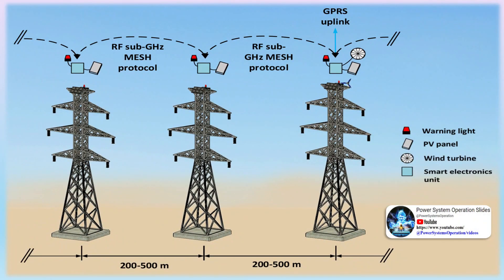A telecommunications power tower is a common tall structure found in outdoor open spaces. For the flight safety of aviation aircraft, it is necessary to install suitable aviation obstruction lights on the tower. The types of obstruction lights required for telecommunication power towers of different heights, as well as the number and layout of installations, vary accordingly.